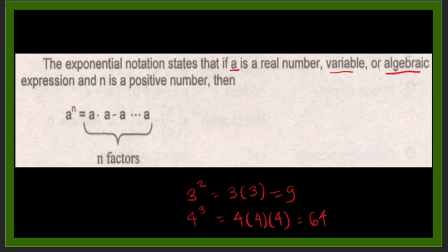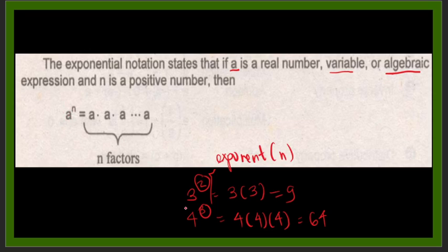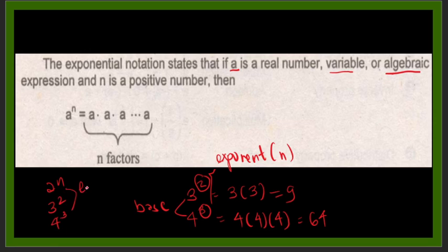So that is exponential notation. The numbers 2 and 3 — these are what we call the exponent, also referred to as n. The 3 in 3 squared and the 4 in 4 cubed are what we call the base. The whole expression — a to the n, 3 squared, and 4 cubed — these are exponential notations.